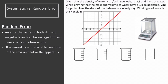Next, we have random error. This type of error can vary both in sign and magnitude, and can be averaged to zero if you take several measurements and average them out. It is caused by unpredictable conditions of the environment or the apparatus. For example, a change in temperature in the environment is a random error — you measure on a hot day, then a cold day, and get different results. Another example is misreading a measurement: one day you read 50 milliliters with glasses, the next day without glasses you read 45 milliliters.